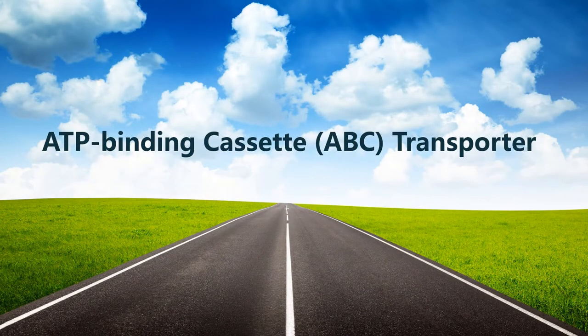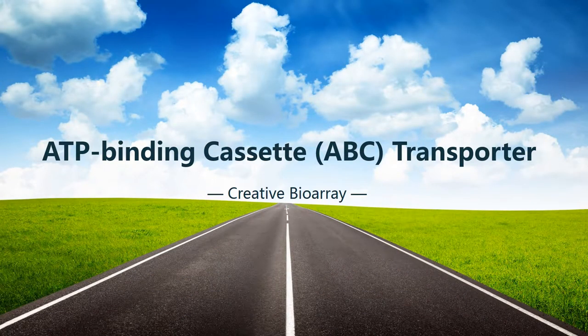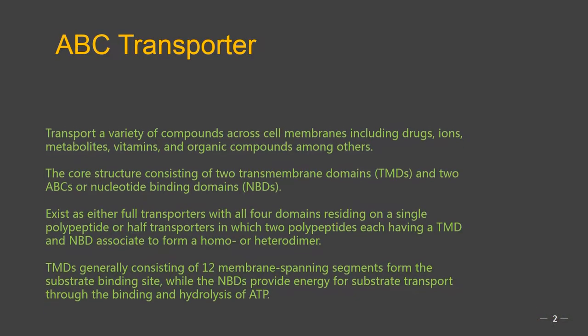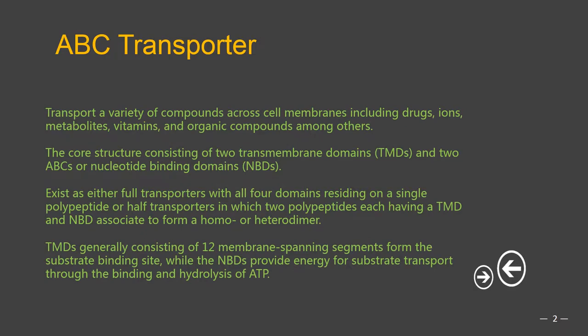ATP binding cassette, or ABC transporters, form a large and ubiquitous superfamily of transporters that participate in a wide range of physiological processes. The transport process is energized by ATP. ABC transporters typically transport a variety of compounds across cell membranes including drugs, ions, metabolites, lipids, vitamins, and organic compounds among others. These proteins have a core structure consisting of two transmembrane domains (TMDs) and two ABCs or nucleotide binding domains (NBDs).